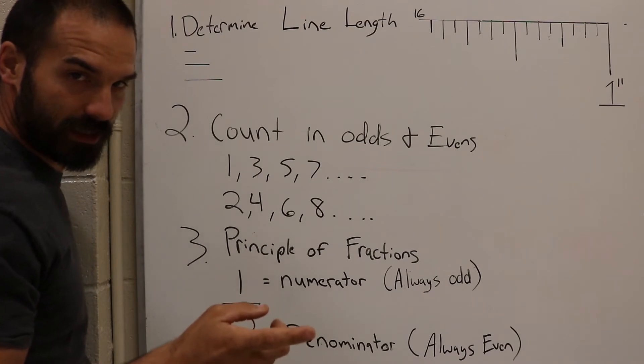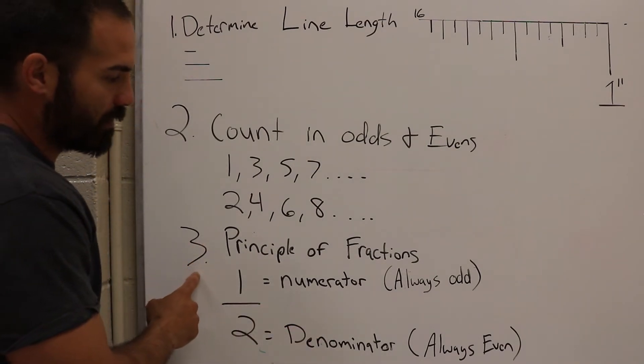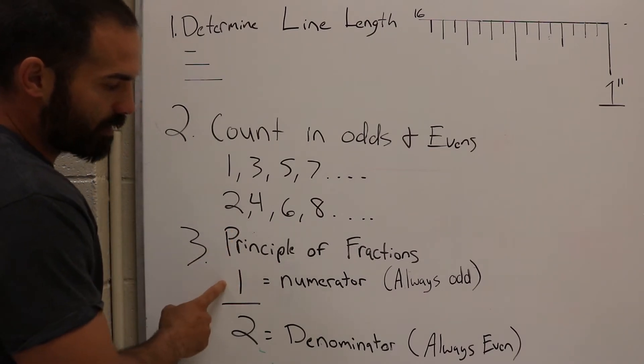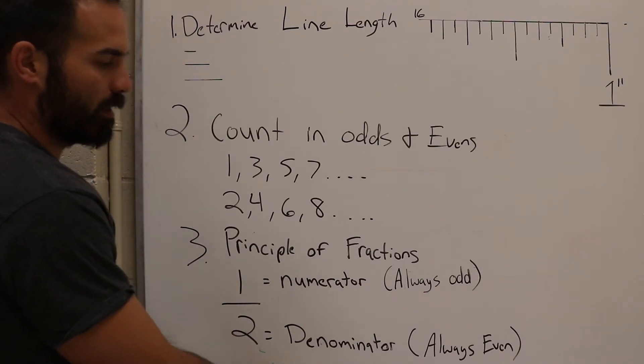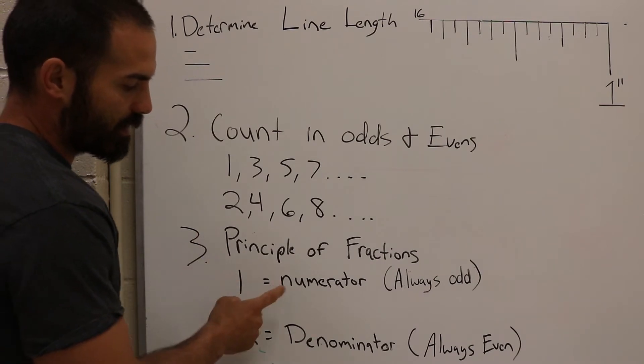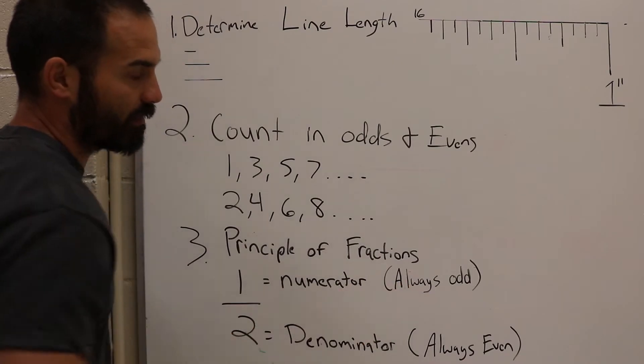Now you're 66% of the way there. And the third thing you must be able to do is know the principles of a fraction. If you can tell me the top number is a numerator and the bottom number of a fraction is a denominator, you're good. Also, always remember that on a measurement, the top number, the numerator is always odd and the denominator is always even.